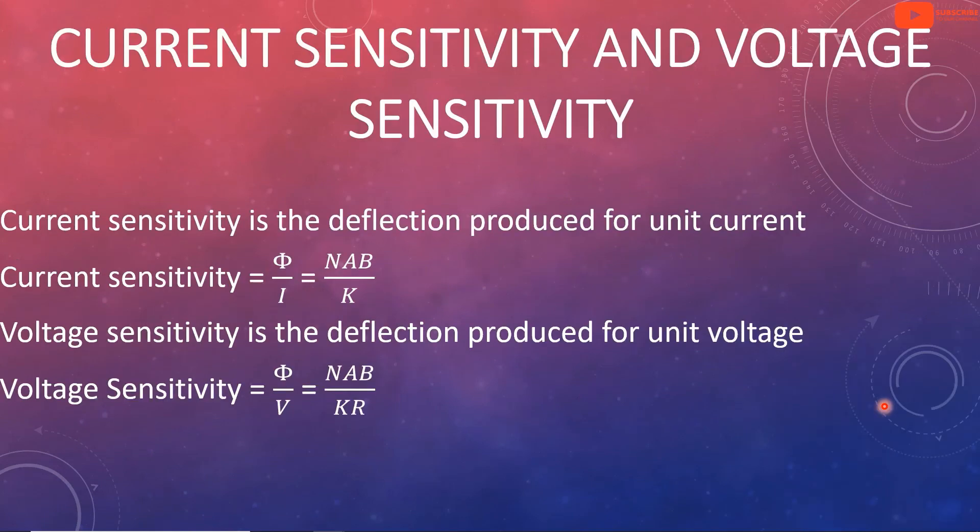Current sensitivity is the deflection produced per unit current. φ divided by I equals NAB by K. This is current sensitivity. Voltage sensitivity is the deflection produced per unit voltage. That is, φ divided by V equals NAB divided by KR. This is voltage sensitivity.